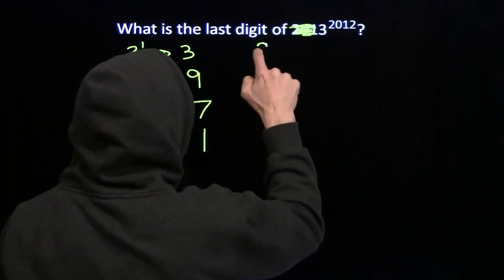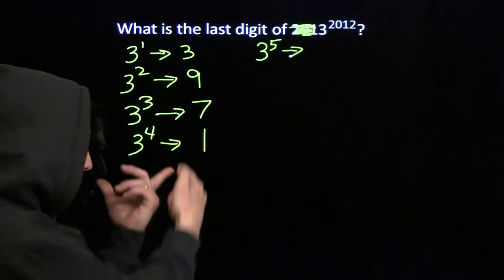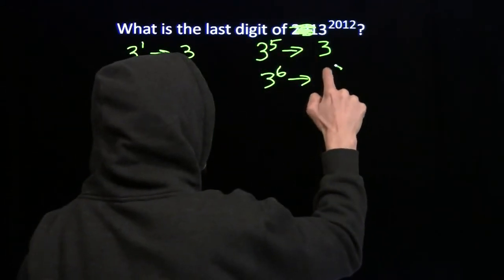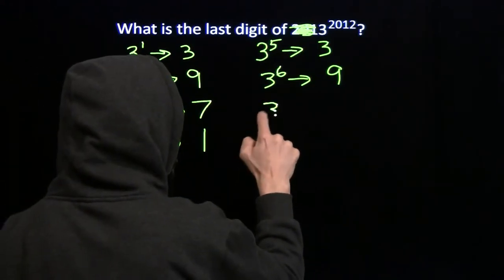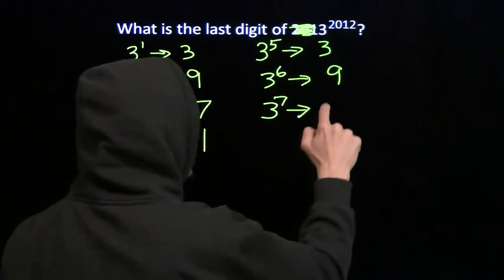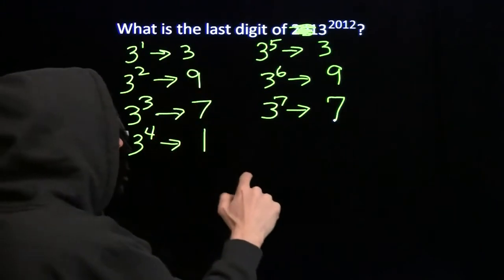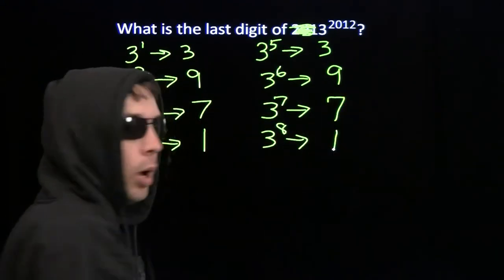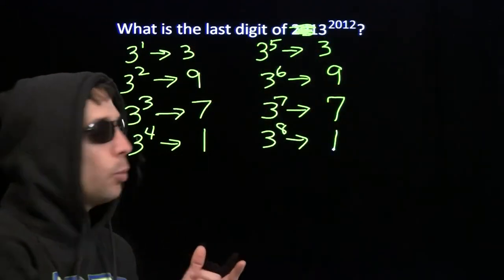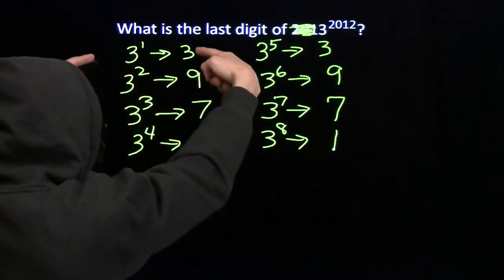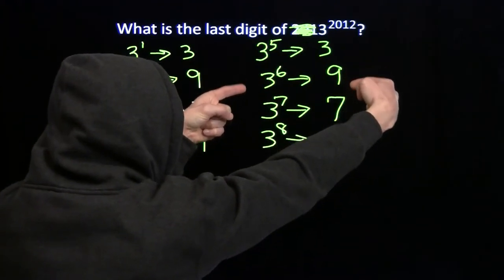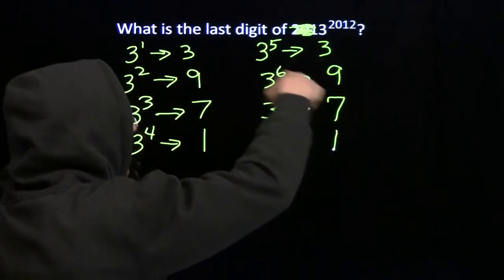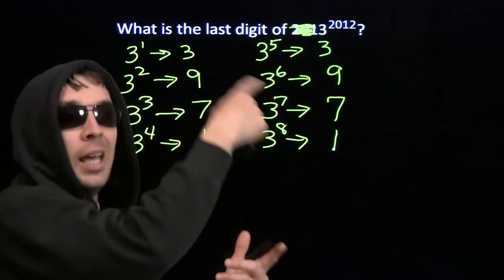All right, 4 down, 2008 to go. 3 to the fifth — multiply 3 to the fourth by 3, multiply 1 by 3, you get 3. 3 to the sixth ends in 9. 3 to the seventh — multiply something ending in 9 by 3, you get something ending in 7, just like before. 3 to the 8th ends in 1. We're just repeating the same 4 steps. Once we have 3 again, we're going to repeat the same cycle. So 3 to the 9th is going to end in 3, and around we go. We found a pattern, and how did we find it? We did something stupid, and something good happened.